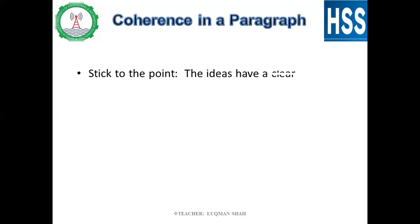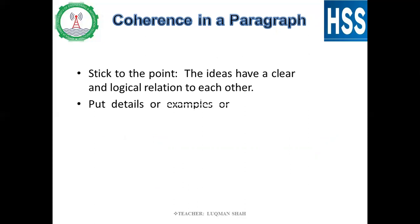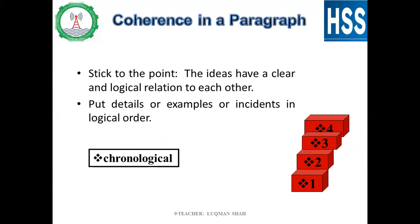Coherence in a paragraph — what is coherence? It is the connecting of the idea of one sentence with the other, the gluing of one sentence with the other, the flow of thought from one sentence to the next, to the third, to the fourth, to the fifth. This can be achieved through putting details, examples, or incidents in logical order. Look at these stairs — there is coherence between the first and second, second and third, and third and fourth. When there is a relationship between sentences, that is called coherence.